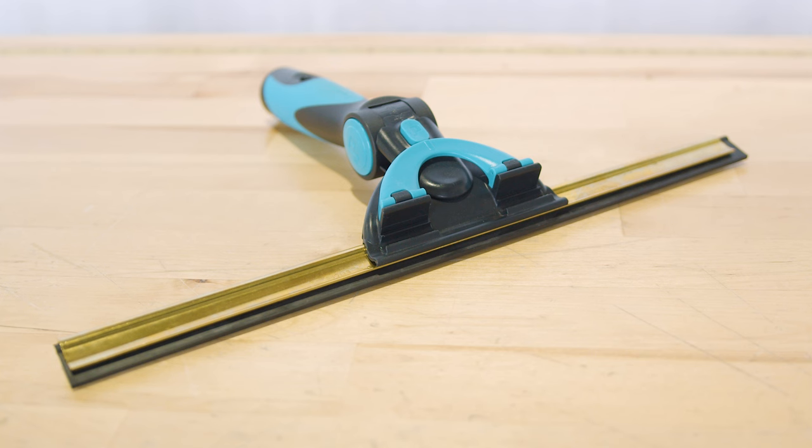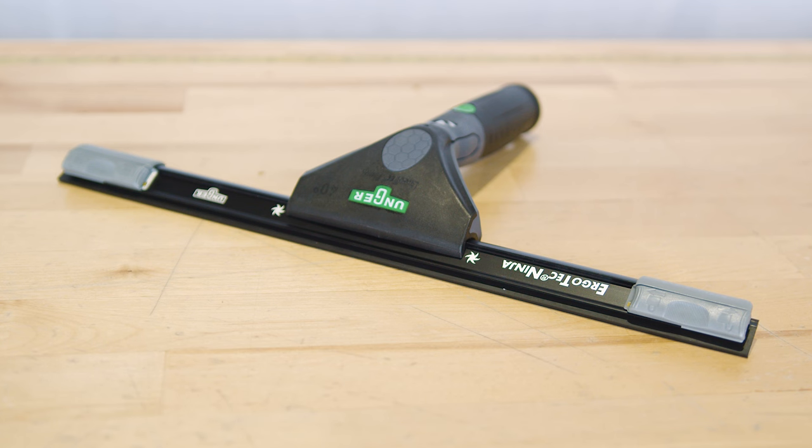The Ultimate Squeegee Combo offers an all-around solution, while the Unger Ninja is ideal for those seeking ergonomic ease and targeted cleaning.